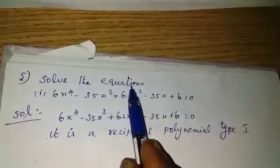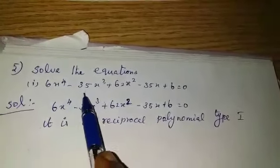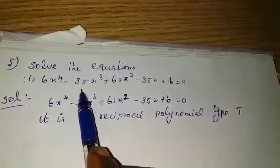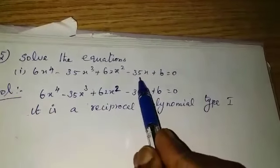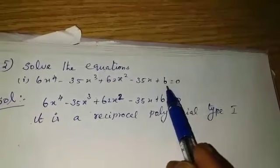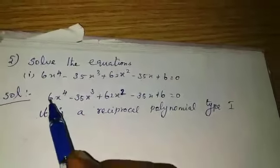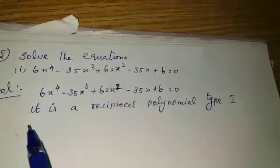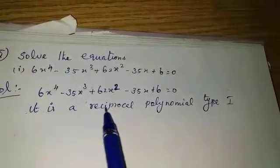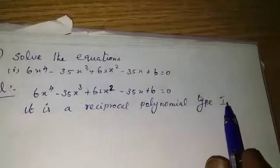Solve the equation 6x⁴ minus 35x³ plus 62x² minus 35x plus 6 equal to 0. Write the given equation. It is a reciprocal polynomial type 1.